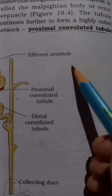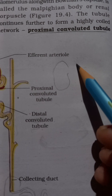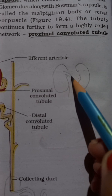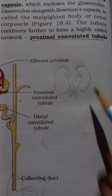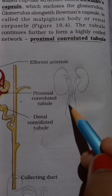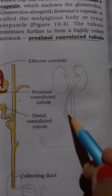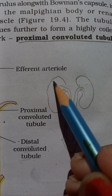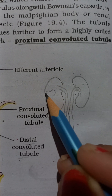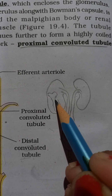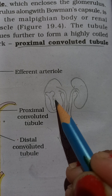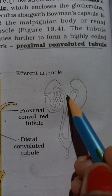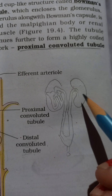To summarize the overall location: we have two kidneys, each connected via a ureter to a common urinary bladder. Each kidney contains millions of nephrons, each with a glomerulus, PCT, Loop of Henle, DCT, and collecting duct leading to the ureter.